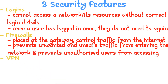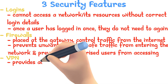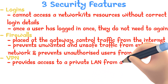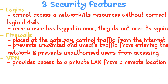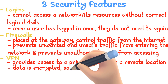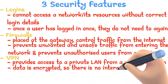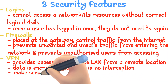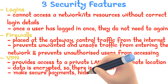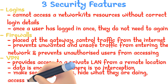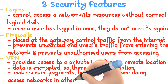VPN. A virtual private network allows access to a private LAN from a different location. Data sent through a VPN is encrypted, so there is no interception. People can use VPNs to make secure payments, hide what they are doing, or to access networks in other locations.